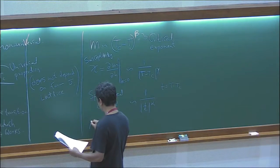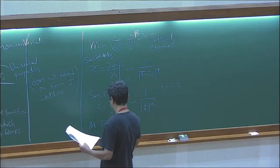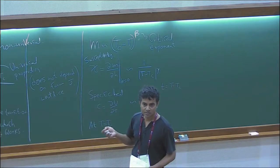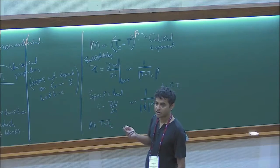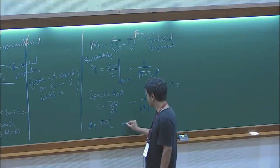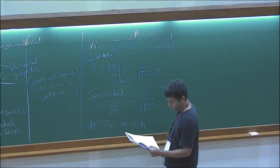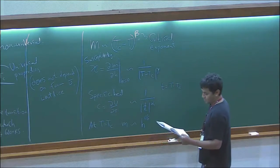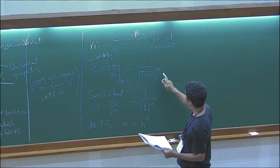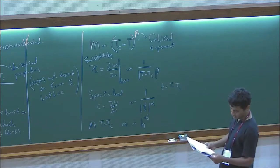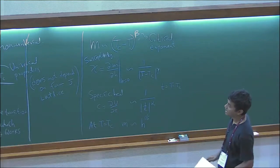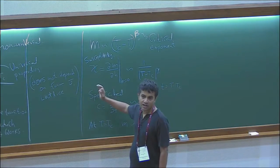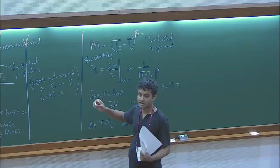And then exactly at T = T_C, what is the magnetization? Zero. But if you put a small field, you will get a magnetization, and the dependence on the magnetic field will go as some power, giving another exponent delta. So you get four exponents: alpha, beta, gamma, delta. And there's one more important exponent to do with correlations.